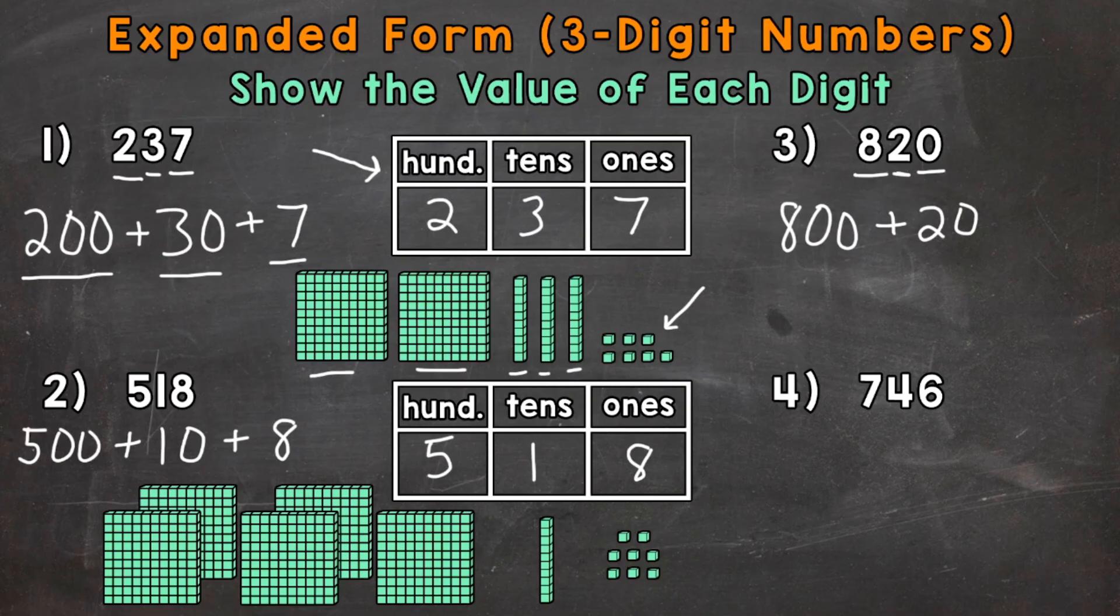Lastly, number 4, we have 746. So we'll start with the 7, which is in the hundreds place. So this 7 has a value of 700. Then we'll move to the 4, which is in the tens place, which has a value of 40. And then lastly, we have the 6 in the ones place, which has a value of 6.